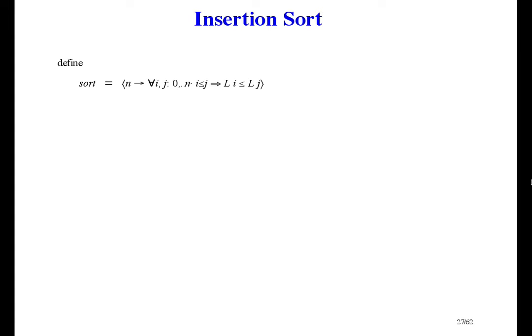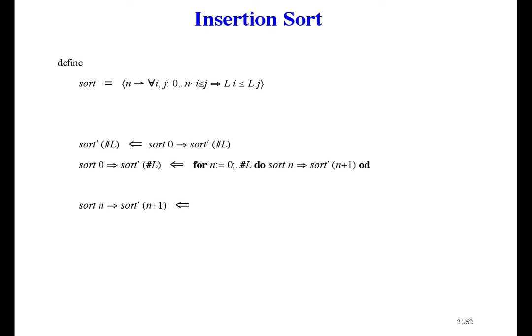The next example is insertion sort. Define sort with parameter n to mean that list l is sorted up to index n: for all i and j from 0 to n, if i is less than or equal to j, then l[i] is less than or equal to l[j]. The problem is sort_prime of length of l — we want l to be sorted right to its end. We can refine that as sort(0) implies sort_prime of length of l, because sort(0) is trivially true. This implication is exactly the right form for refinement by a for loop, so all we have to do is get from sort(n) to sort_prime of n plus 1.